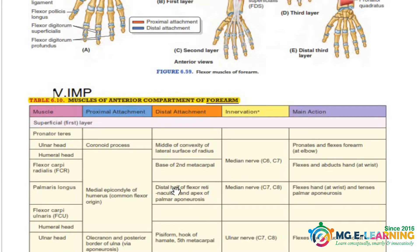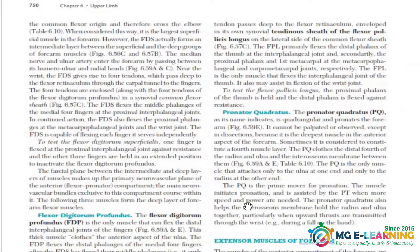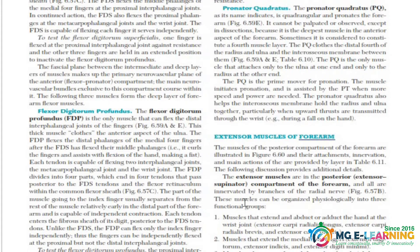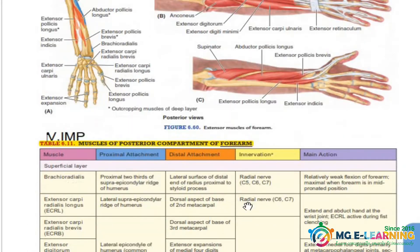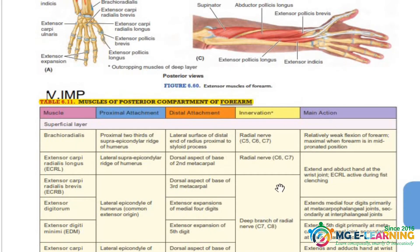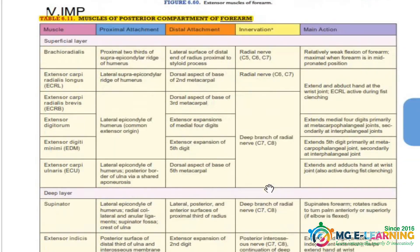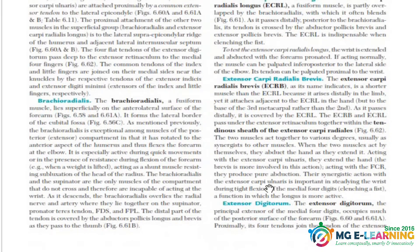The muscles of the anterior compartment — you have to learn this table completely, very important for MCQs. Moving forward, this detail is not that important, just give it a read. Then we have the muscles of the posterior compartment — again, this table is very important and has to be done completely.